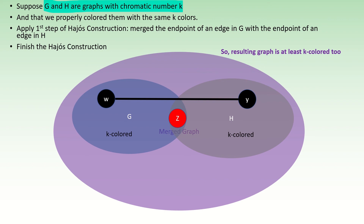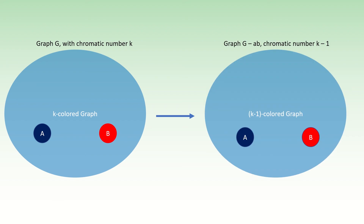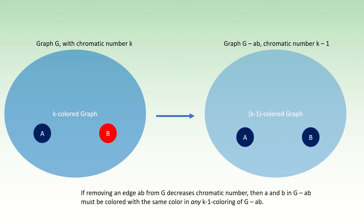Why? Suppose I give you some arbitrary graph of chromatic number k, colored with k colors, and then I tell you that by removing an edge a,b from this graph, it can be colored in k-1 colors. The only logical conclusion is that in the new graph, one of the endpoints of that edge a,b was colored with the color used on the other endpoint. That is, in any k-1 coloring of this new graph, the two old endpoints a and b have to have the same color. Otherwise, if the two points remained of opposite color and you could still color the graph with k-1 colors, then by adding the edge back in, you obtain a k-1 proper coloring of the original graph — a contradiction, because the original graph had chromatic number k.